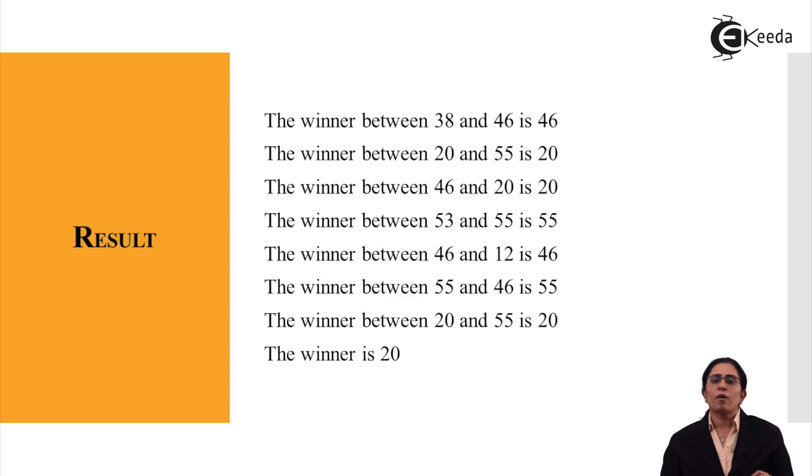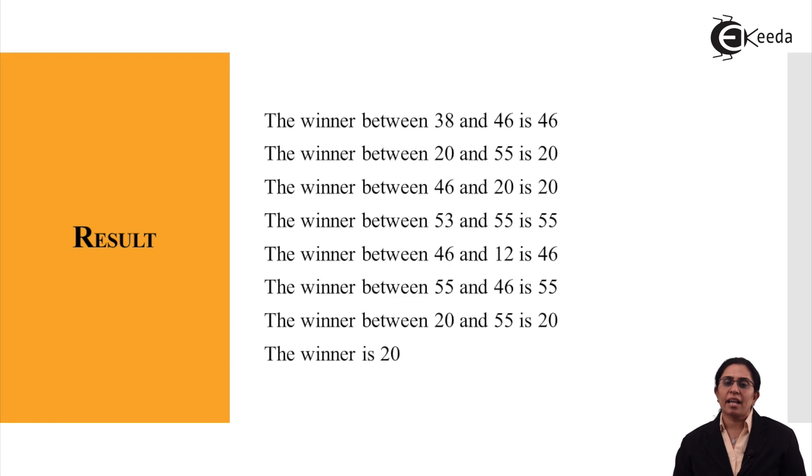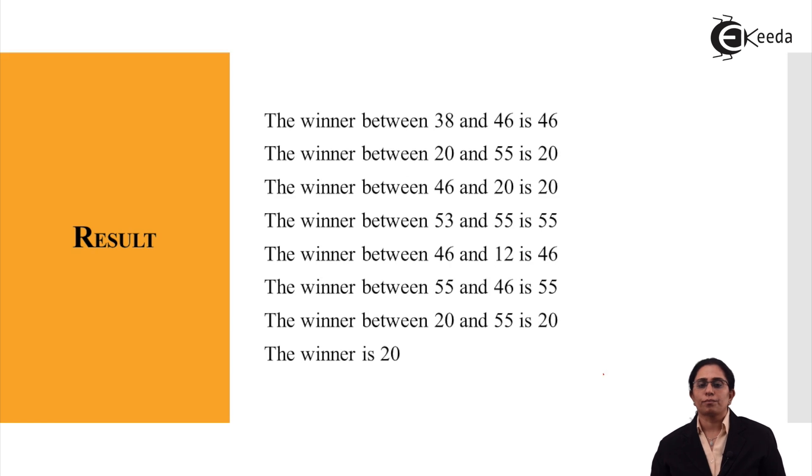So this is how the continuous loop works — the winner is ultimately taken and declared at the end. Thank you.